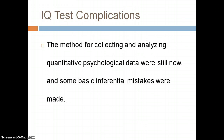The IQ confirmations. The methods for collecting and analyzing quality psychology data were still new, and some inferential mistakes were made. Basically, we had a lot of unknown things in statistics that people did not understand how to collect. People were still finding out what was right to collect and what was wrong to collect. Many people who were collecting data were unprofessionals — people without sufficient background in statistics.